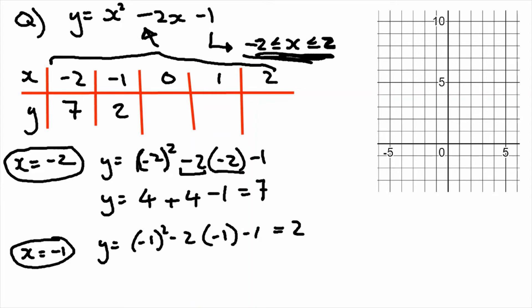We're just going to do one more calculation before I cheat and put the answers in. x equals 0: y equals 0 squared minus 2 lots of 0 minus 1. Remember 0 squared and anything times 0 is 0, so we're going to get minus 1 for this one.